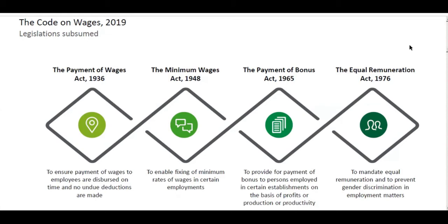The Code on Wages 2019 is a uniform, universal wage code introduced by the Government of India to make wage rules easy, universal, and uniform throughout the country. This code was introduced but is still pending for implementation.